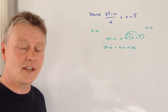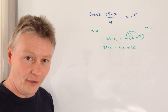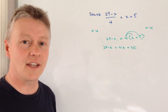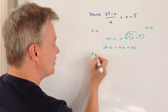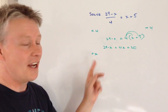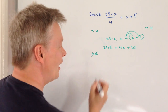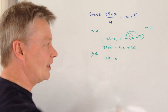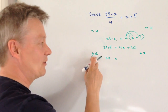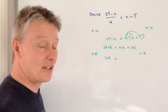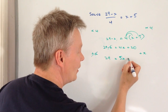Now it's just a case of making sure that you get x's on one side and numbers on the other. At the moment I've got 4x here and minus x. I don't like minus x, so I'm going to add x to this side. That means the minus x and plus x cancel, and I get left with 29. On the right hand side, I have to add x to both sides to maintain balance. So 4x plus x is 5x, and then plus 20.